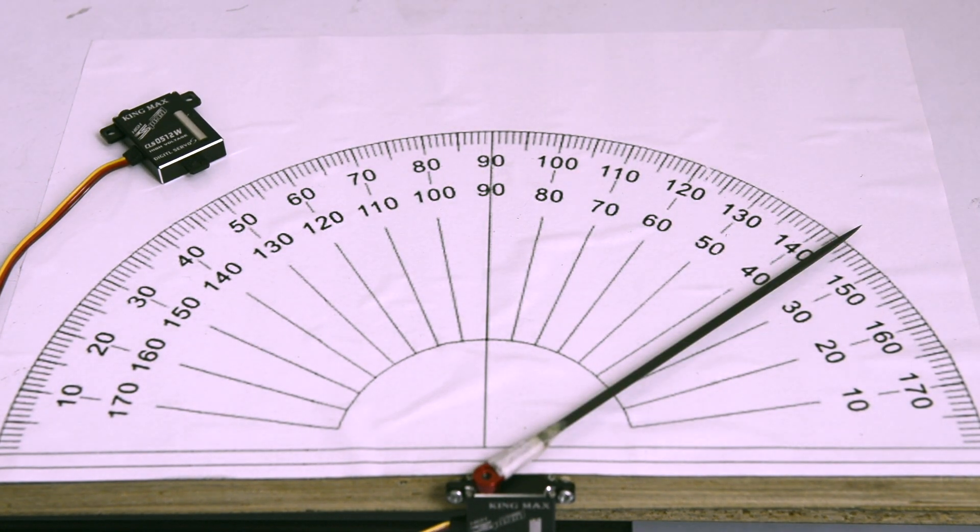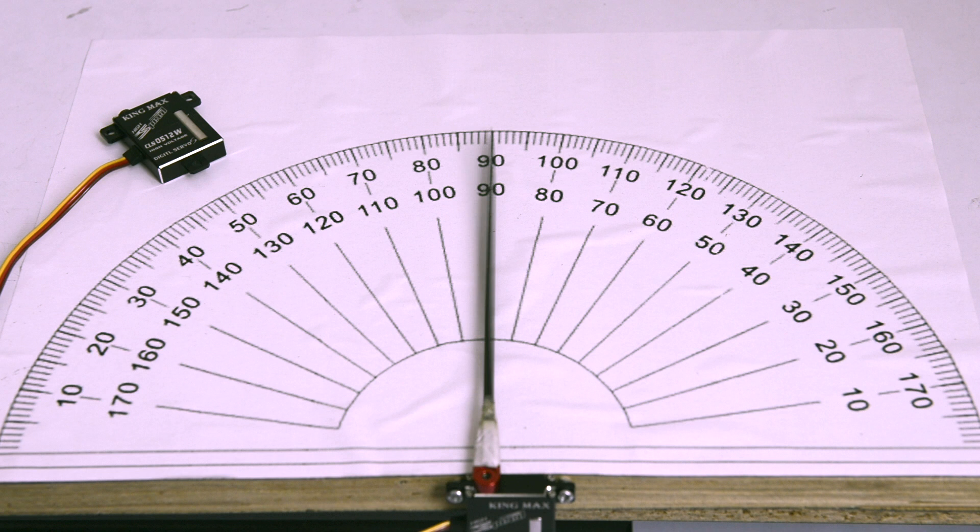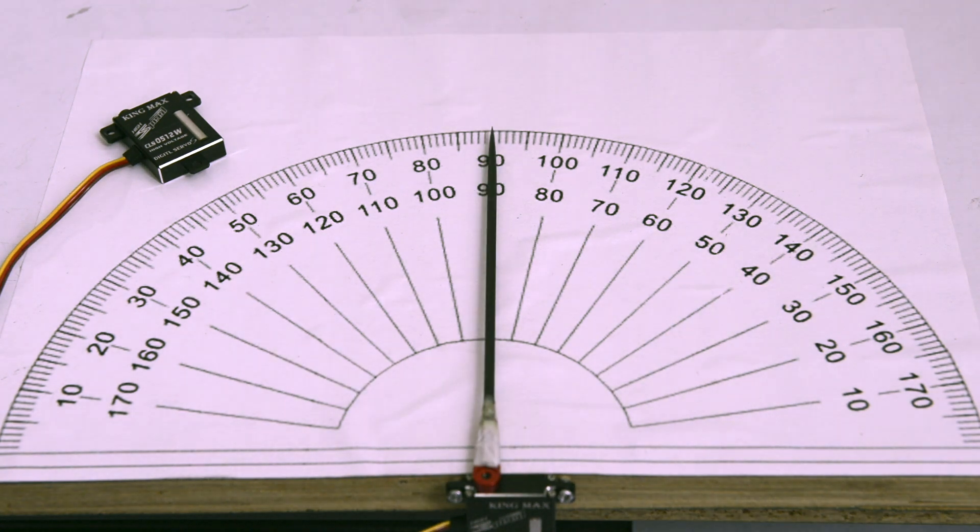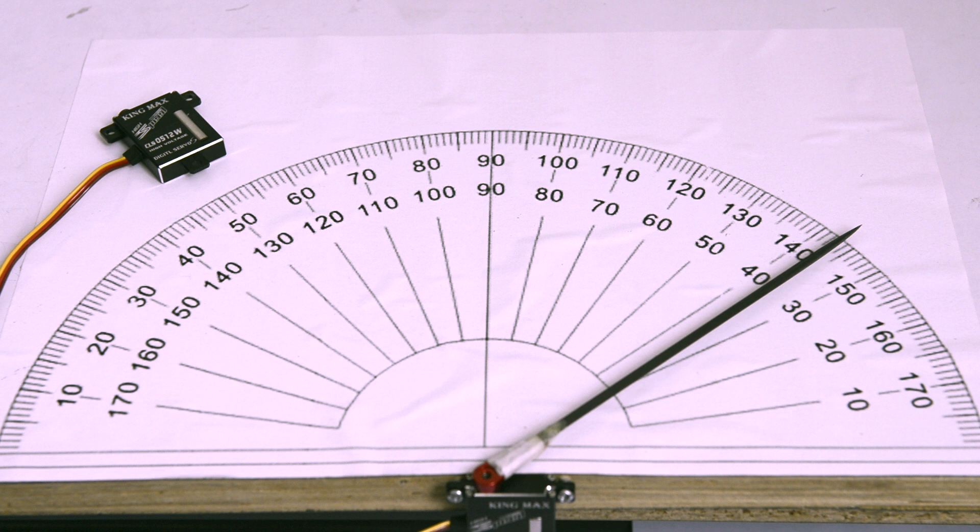Okay, so this is a test of the KingMax CLS0512W, it's the ultra-thin wing servo, and we're running it on 7.4 volts. Our center position for the servo was 1,500 milliseconds, and we've cycled it about 30 times now.